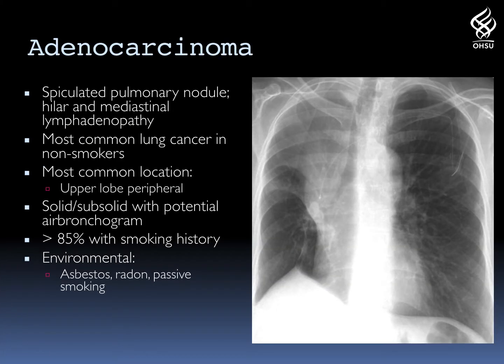Adenocarcinomas usually depict a spiculated pulmonary nodule, often with hilar and mediastinal adenopathy. They have an upper lobe peripheral predilection, are commonly solid but can be subsolid with the potential for air bronchogram. They are, for the most part, associated with a smoking history, but other environmental exposures such as asbestos, radon, and particularly passive smoking also cause an increased risk.